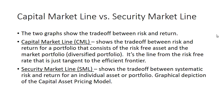It's the line from the risk-free rate that is just tangent to the efficient frontier, and I'll discuss that in a minute if you don't know what the efficient frontier is. There's also the security market line, which shows the trade-off between systematic risk and return for an individual asset or portfolio, and it's the graphical depiction of the capital asset pricing model.